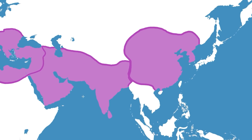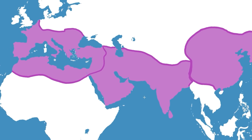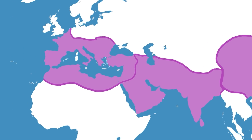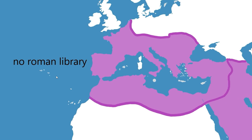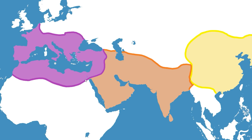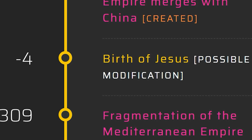Around 200 AD the fragmentation of the empire began, then there's the whole Roman library burning. But for the most part, this world would stem from a similar origin. So whatever happens from here on out, we know there was at one point a massive empire. Now let's go ahead and change up the birth of Jesus.